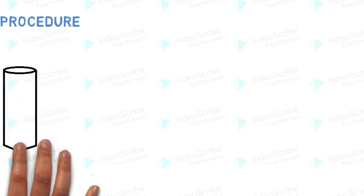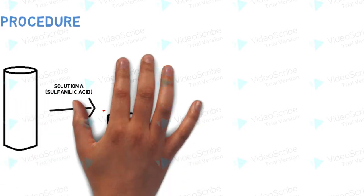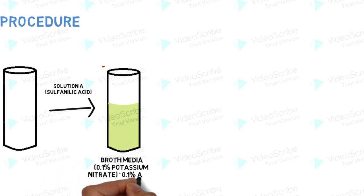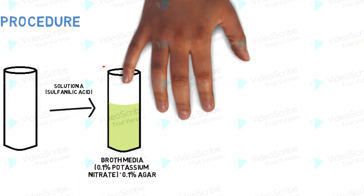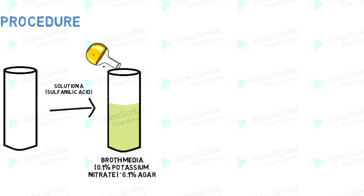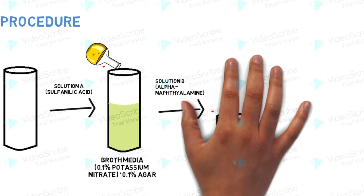The procedure of the Nitrate Reduction Test is as follows: take a test tube and add 0.1% agar media and 0.1% KNO3 into it. Add Solution A, which is sulphanilic acid, and then add Solution B, which is alpha-Naphthalamine.